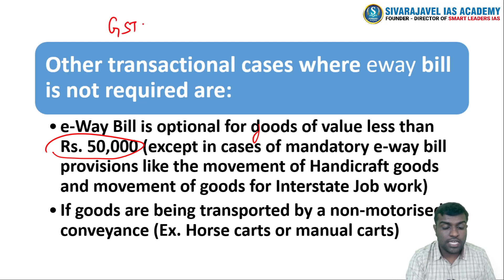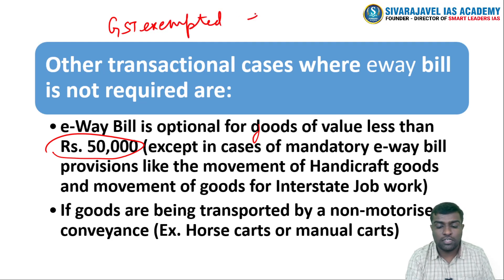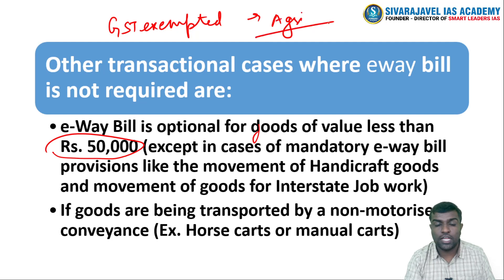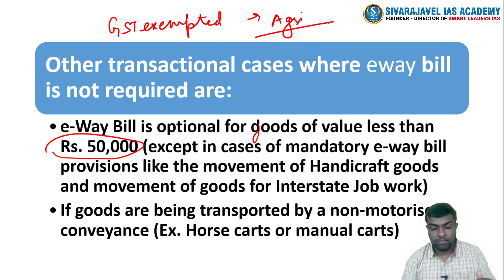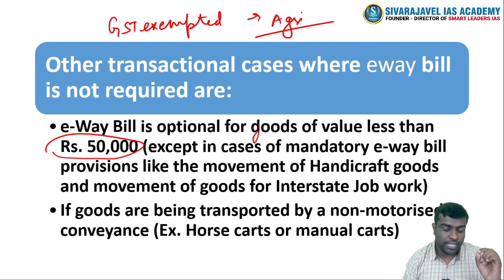GST-exempted items — for example, a lot of agricultural products — are exempted from GST, and therefore they will also not be required to provide an e-waybill.